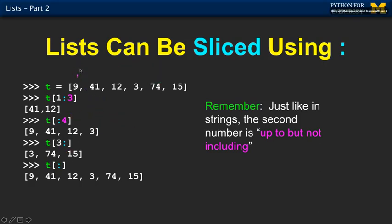Three to the end, so 0, 1, 2, 3, that's three to the end. So that's 374 and 15.